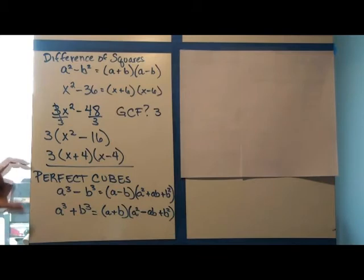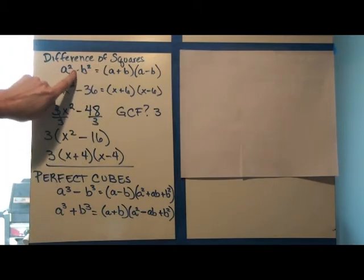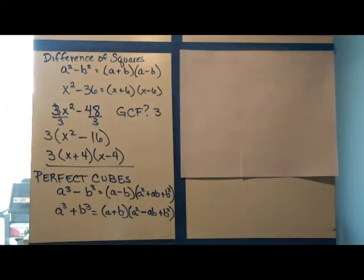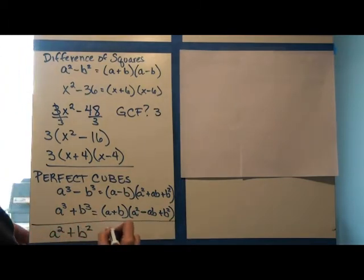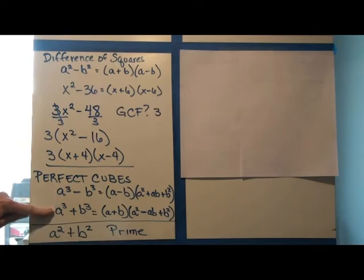Now this is important to note. When they are perfect squares and you have a difference, you can factor them. When they are perfect squares and you have a sum, that is prime. But if you have perfect cubes, you can factor both.